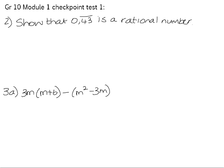Question 2 of Module 1 Checkpoint Test 1 reads: show that 0.43 recurring is a rational number. As we saw in the practice test, when you are asked to show something to be rational, what you are actually needing to do is rewrite it as a fraction.